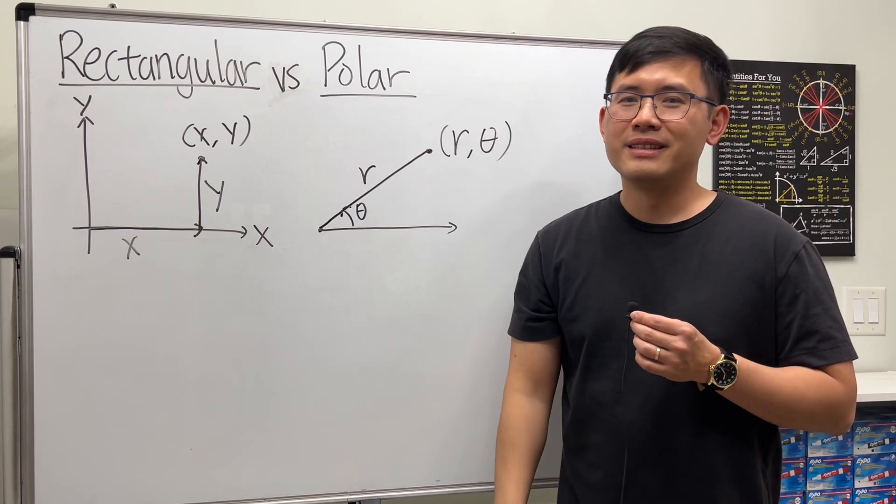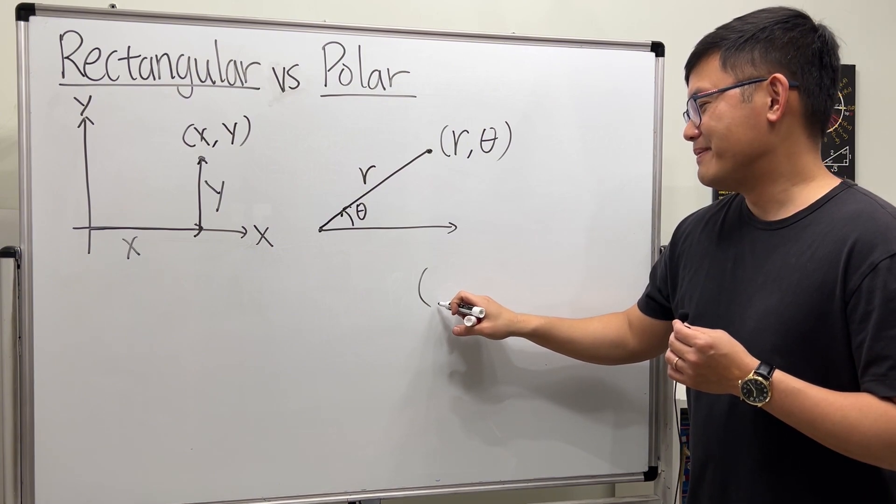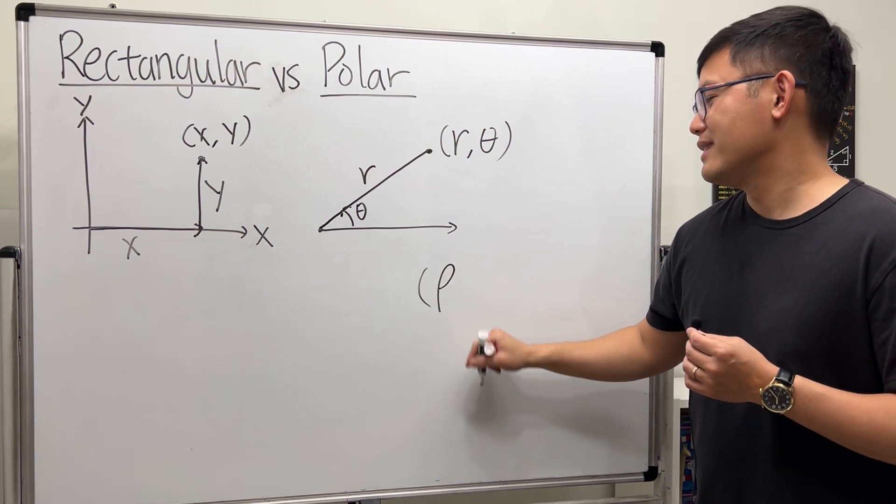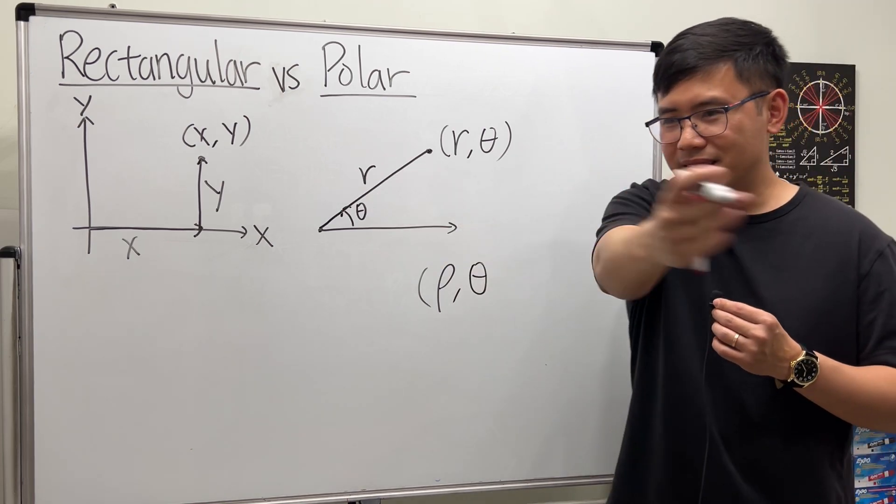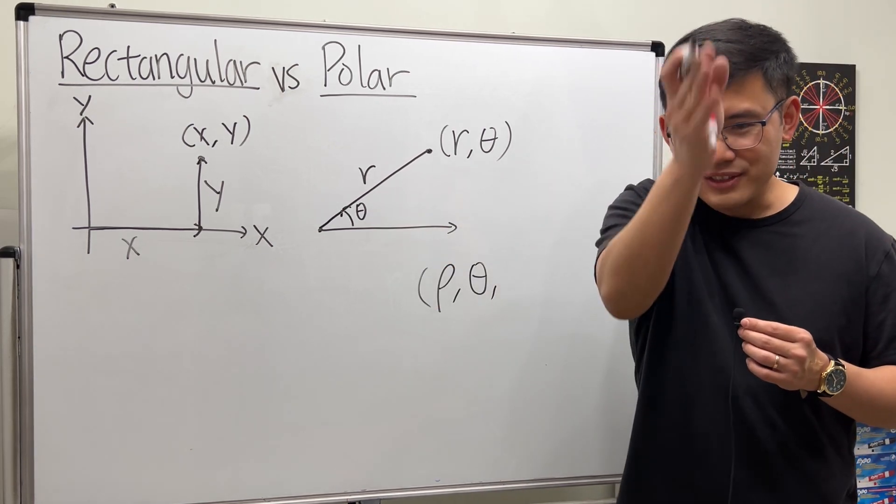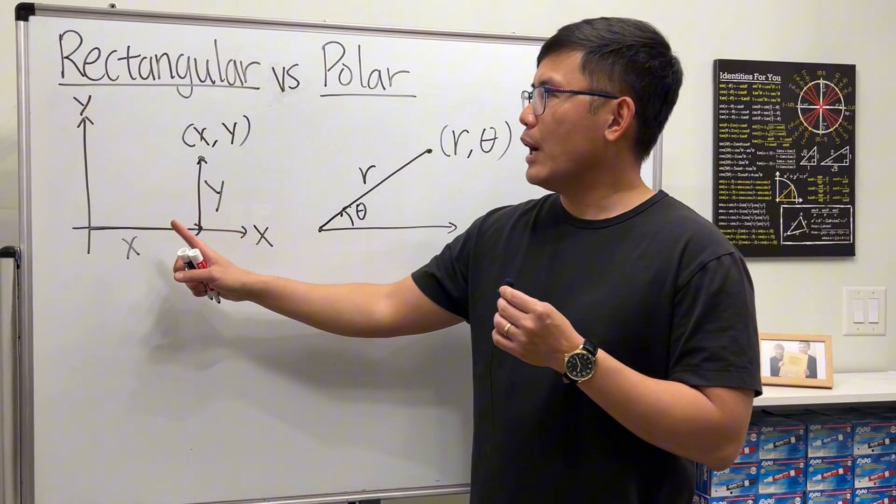So in that case, once we get into Calc 3, we have three components: the distance we use rho (ρ), this rotation theta (θ), and this rotation phi (φ).